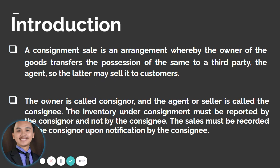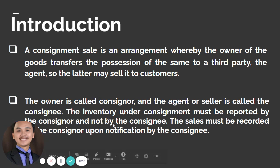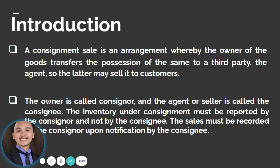The owner is called the consignor and the agent or seller is called the consignee. The inventory under consignment must be recorded by the consignor and not by the consignee. The sale must be recorded upon the consignee's notification to the consignor.